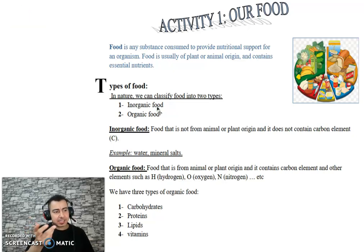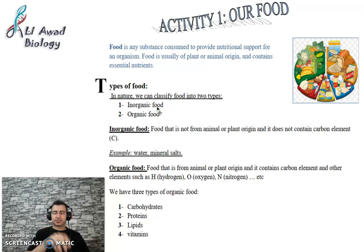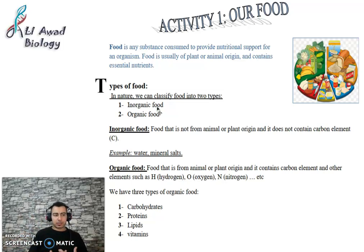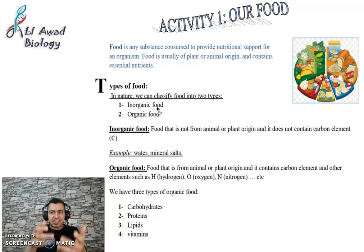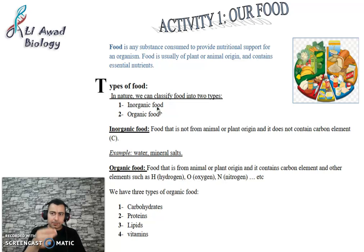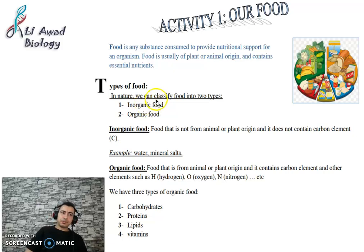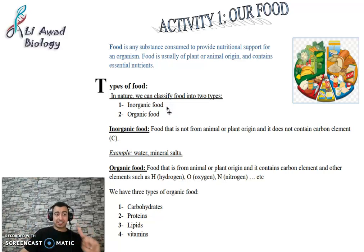Everything in nature is made up of atoms. One of these atoms is called carbon. The material containing carbon atoms is considered organic. So the main distinction is based on carbon: organic food contains carbon, while inorganic food does not contain carbon.